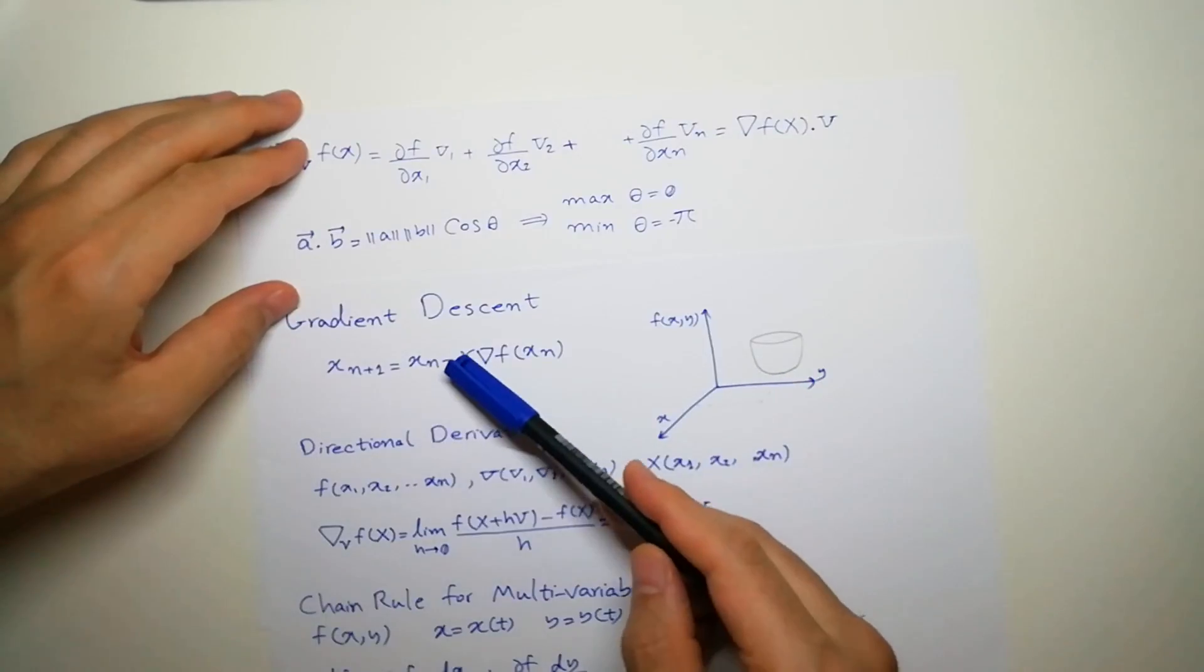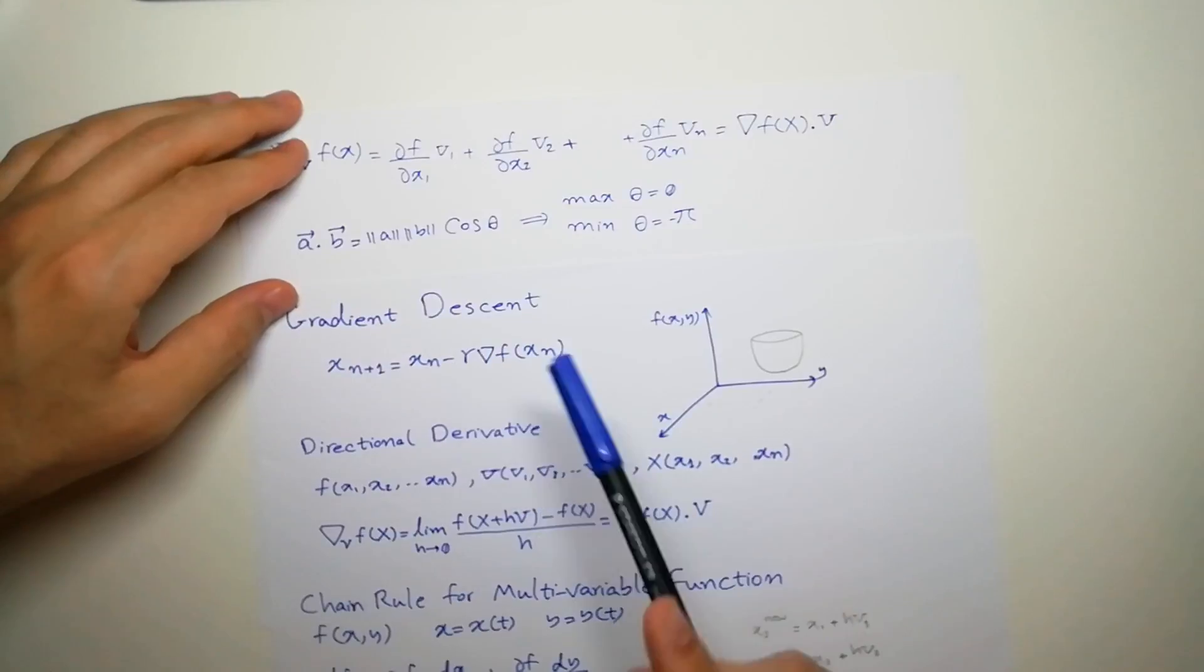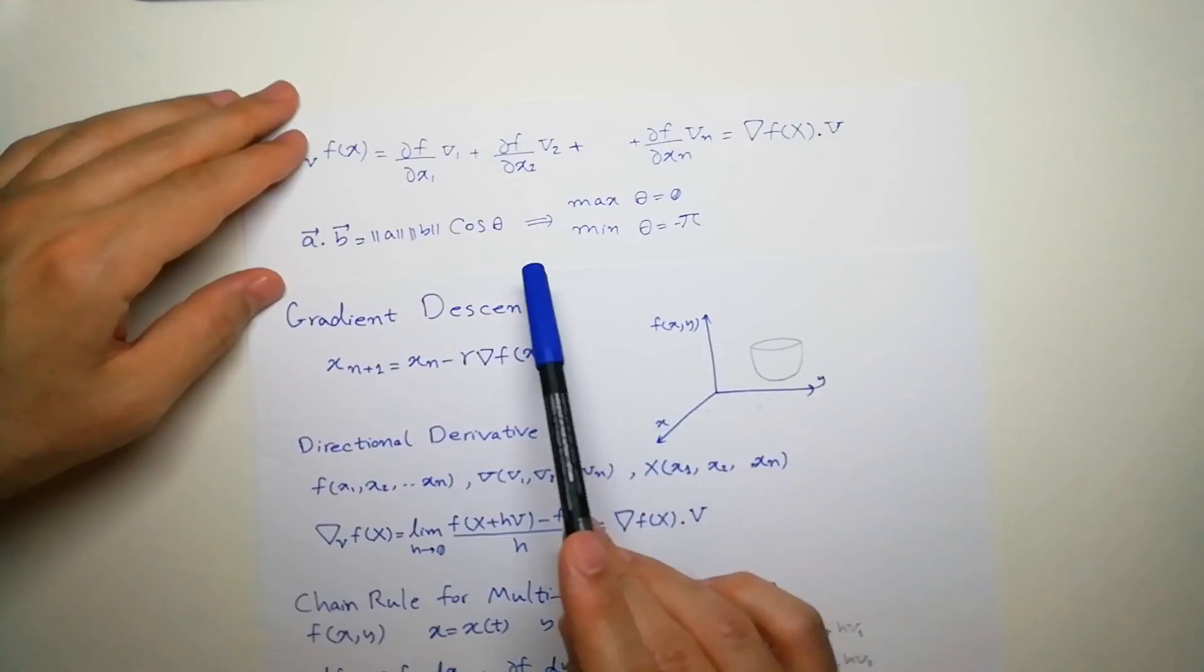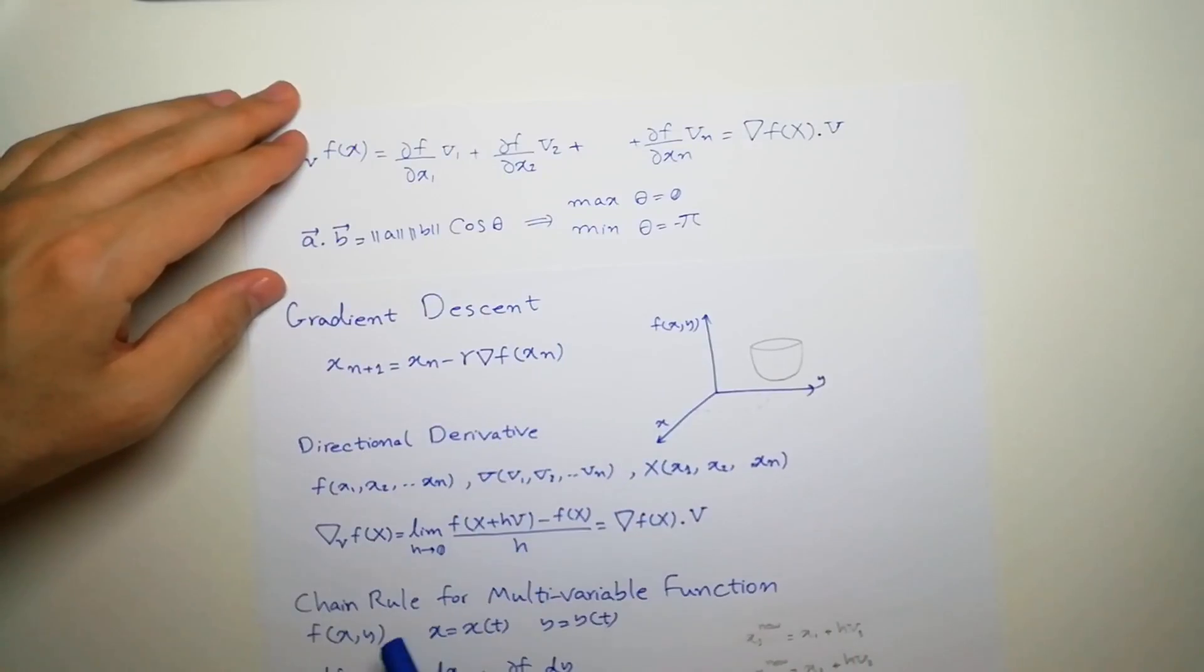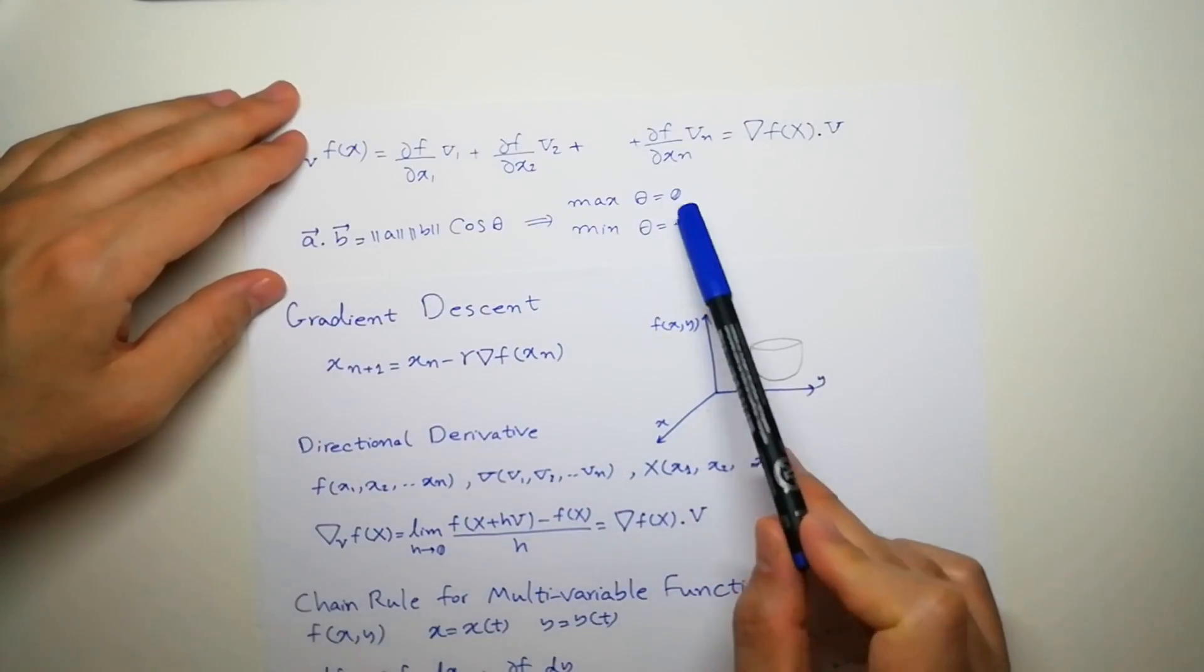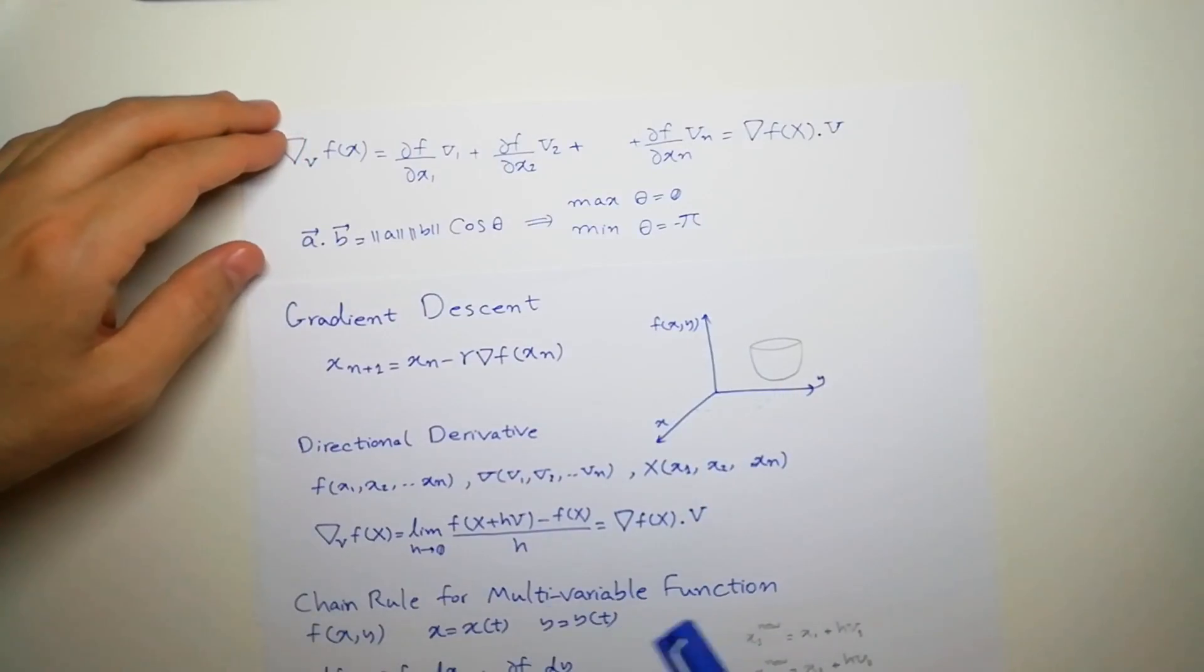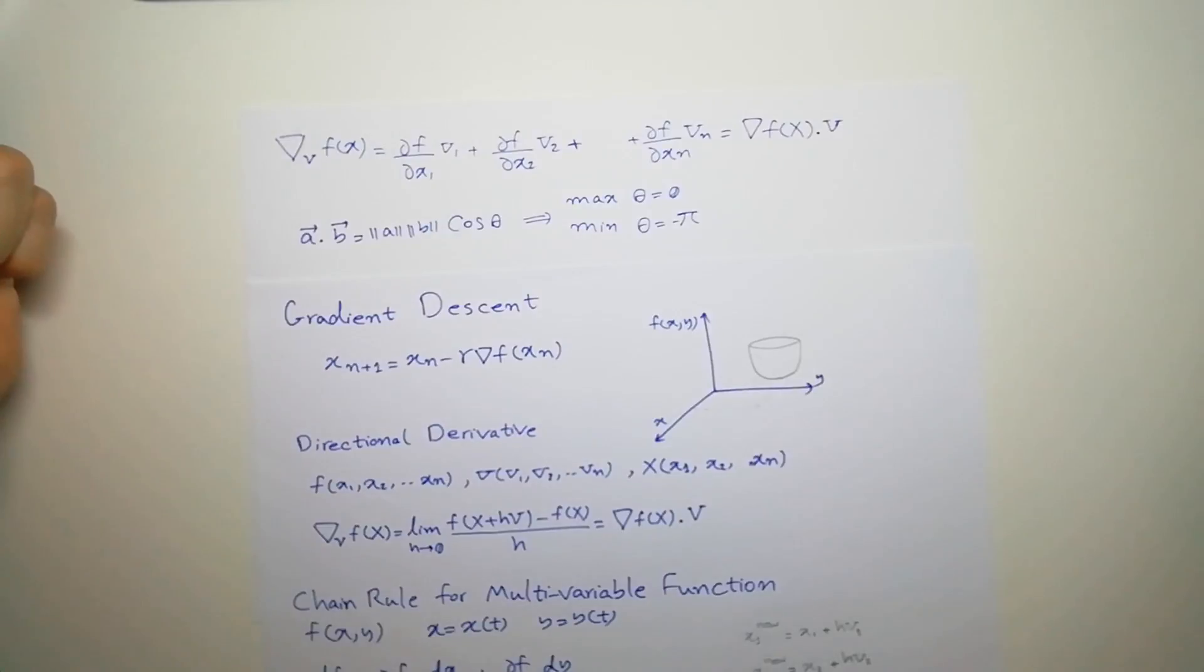So this is only the step size. And the main idea is actually coming from directional derivative and chain rule, which by setting zero or minus π, we get maximization or minimization. Thank you.